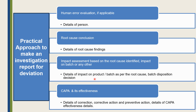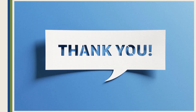Next is CAPA and its effectiveness monitoring, where you describe the correction, corrective action, and preventive action taken based on the identified root cause. You also need to perform effectiveness monitoring of this CAPA to check whether the CAPA taken is effective in the future. Friends, this is all about deviation. I hope it helps you understand the concept. Thank you so much for watching.